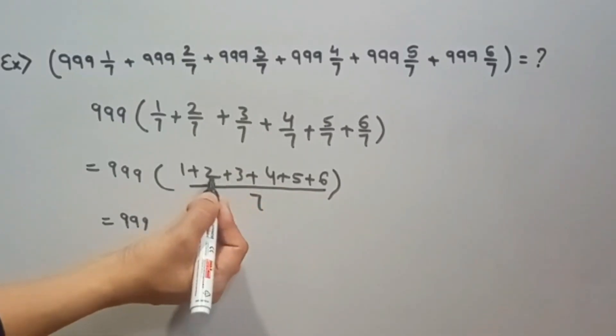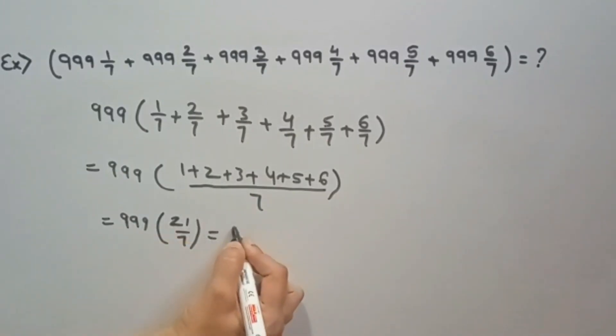Now add: 6 plus 4 is 10, plus 5 is 15, plus 5 is 20, 21 by 7. 999 into 21 by 7. 3's are 21. Now we will multiply: 3 nines are 27, 3 nines are 27, 3 nines are 27 plus 2 is 29, 3 nines are 27 plus 2 is 29. So this is our answer.